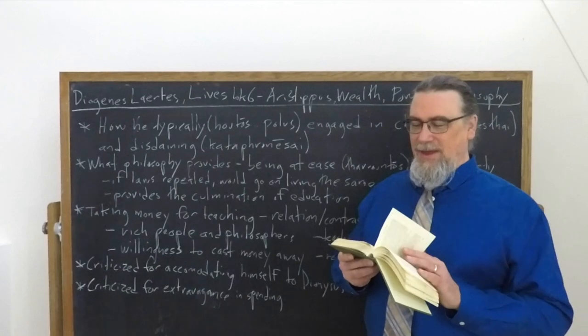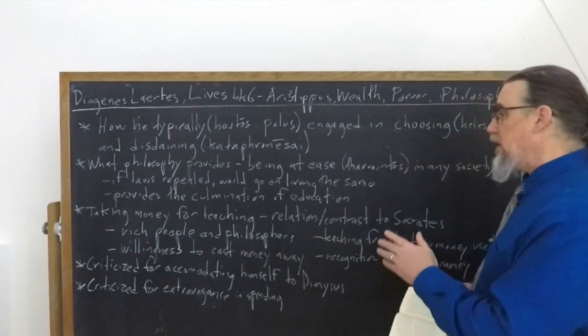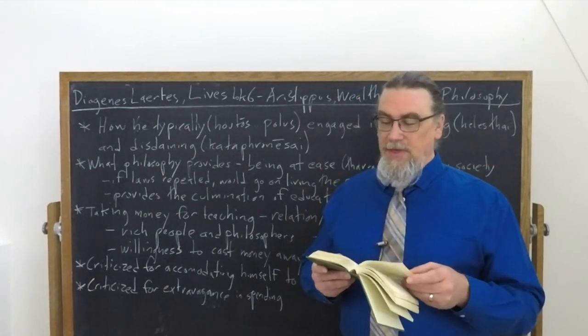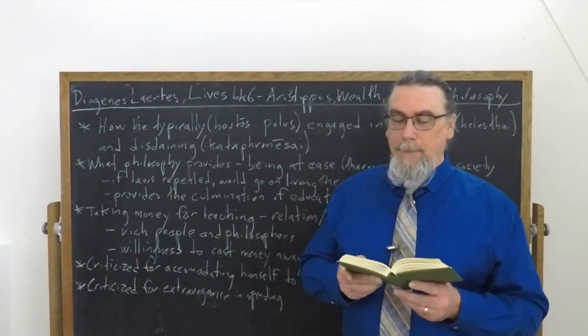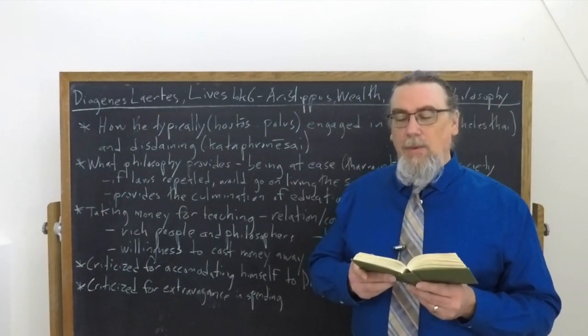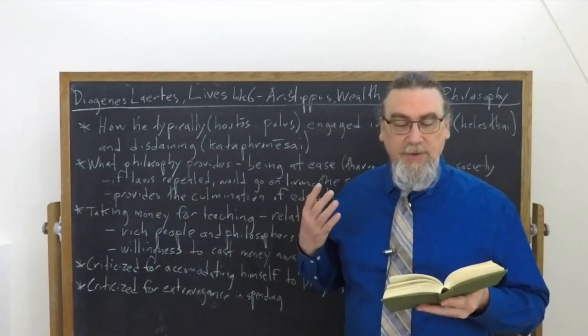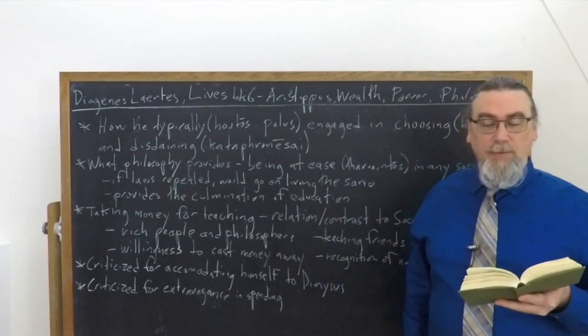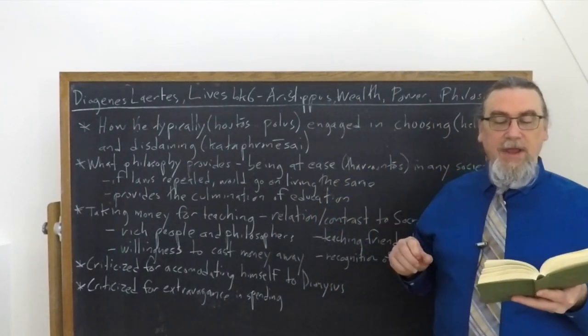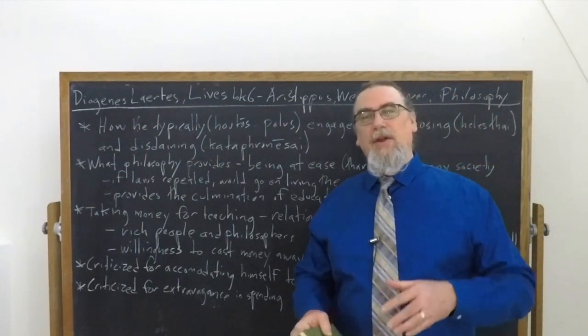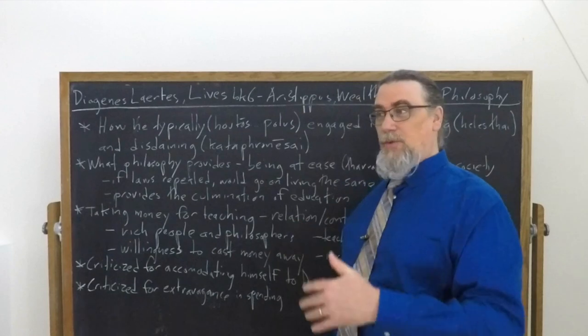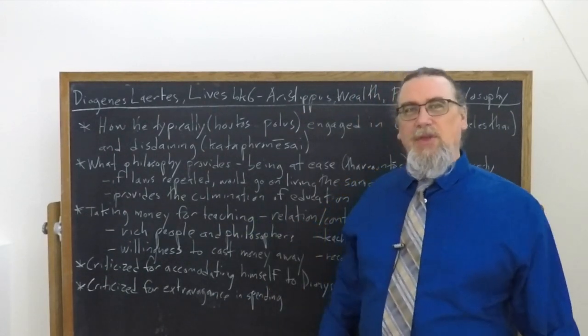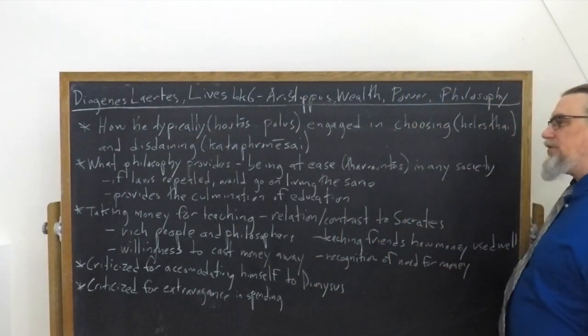So that is an interesting observation. He also talks about rich people and philosophers, and this puts some things into perspective. When Dionysus inquired, what was the reason that philosophers go to rich people's houses while the rich people no longer visit philosophers? Aristippus' reply was that the one know what they need while the other do not. So philosophers know that they need some money and they'll go to the rich people. The rich people don't really know what they need in order to make their lives a genuinely happy one, a self-controlled one.